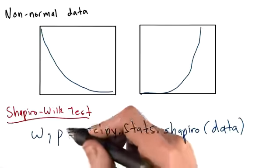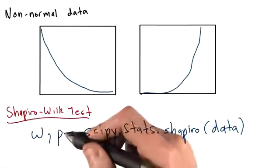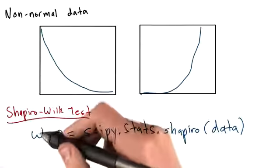That is, given the null hypothesis that this data is drawn from a normal distribution, what is the likelihood that we would observe a value of w that was at least as extreme as the one that we see?